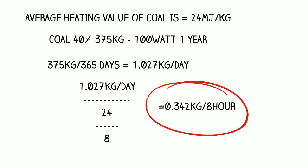But what's that in eight hours? Well you take one kilogram of coal per day divided by 24 and divided by 8, and you get 0.342 kilograms for eight hours of coal use in a coal-fired power station.